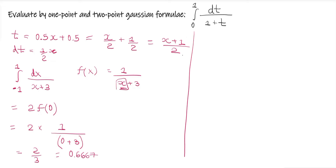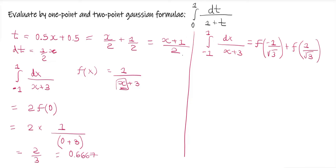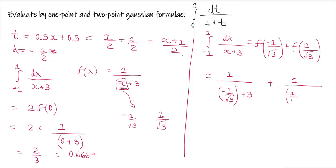Now we'll solve the same thing using the two-point Gaussian quadrature formula: integration from minus one to one f(x) dx equals f of minus one by root three plus f of one by root three. We place minus one by root three and one by root three in place of x, giving one upon minus one by root three plus three, plus one upon one by root three plus three. On solving this we get the answer as 0.6923.